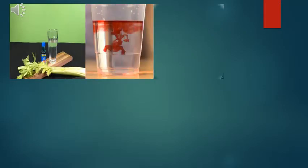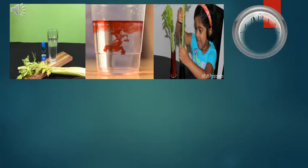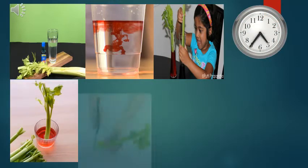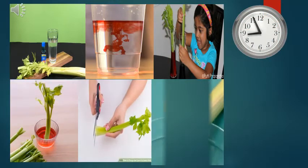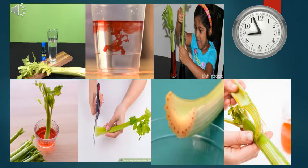We need a drinking glass, food coloring or colored ink, and celery. The first step of this experiment is to add color to the water and stir. Then add one stalk of celery to the colored water.